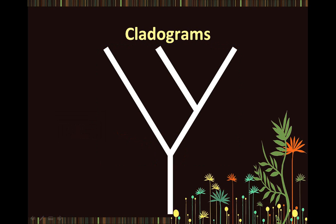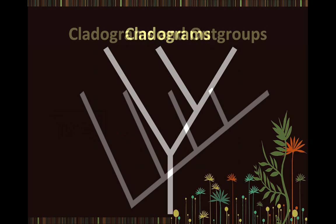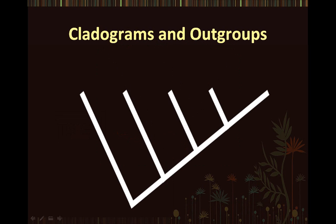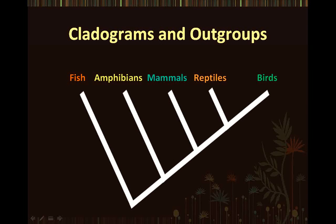Let's look at a real-life example to illustrate the concept of the basal node. In this cladogram, we see five different branches: fish, amphibians, mammals, reptiles, and birds. We will also introduce a new concept now — that of the out-group.